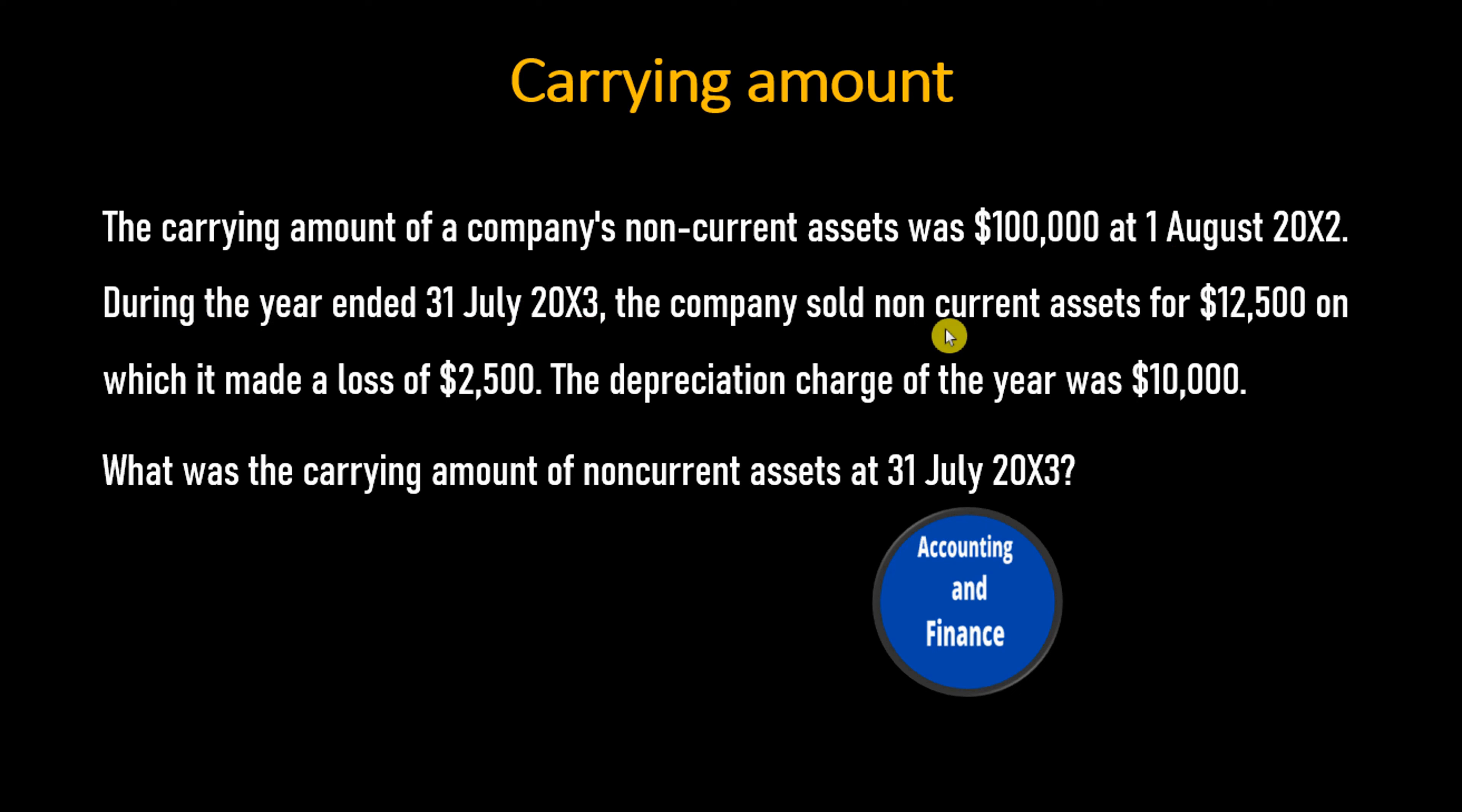the company sold non-current assets for $12,500 on which it made a loss of $2,500. The depreciation charge of the year was $10,000. What was the carrying amount of non-current assets at 31 July 20X3?